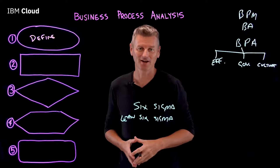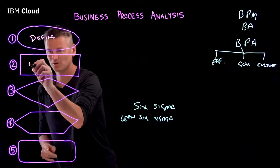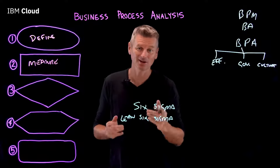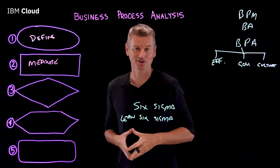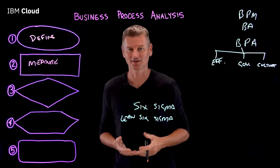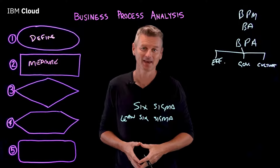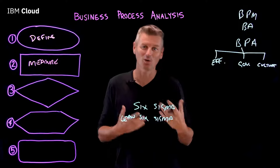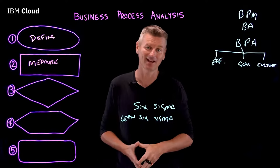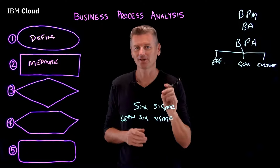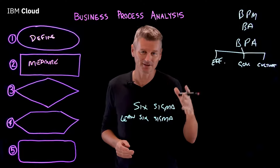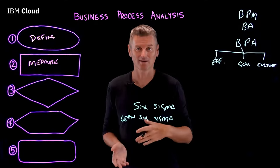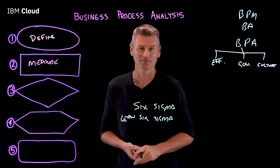With the process defined, we move to step two: Measure. We measure by reviewing how the process functions against defined metrics such as key performance indicators. KPIs provide indications of things like effectiveness, quality, productivity, and value. KPIs are process-specific — for instance, customer engagement workflows might be measured by KPIs for quality and effectiveness versus KPIs for efficiency.